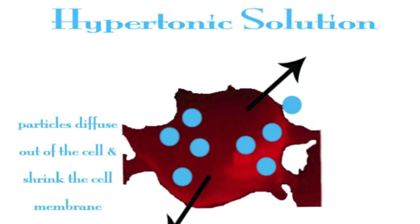In a hypertonic solution, particle concentration inside the cell is less than the outside of the cell, so water moves outside of the cell.